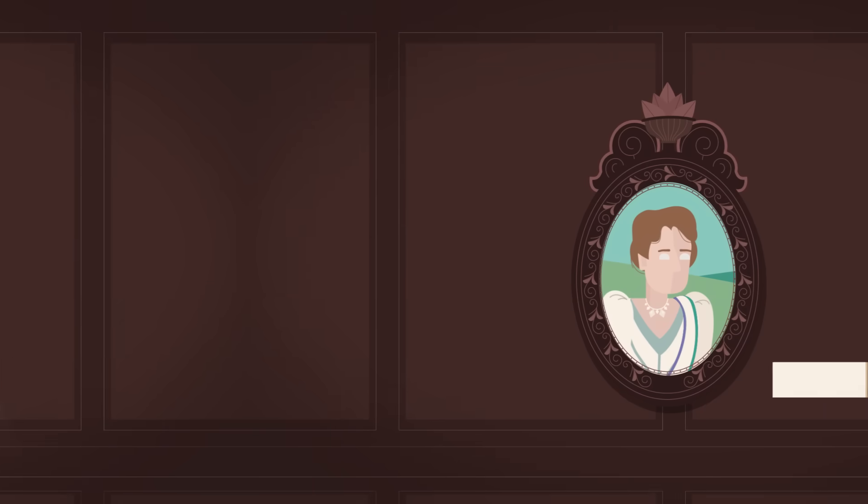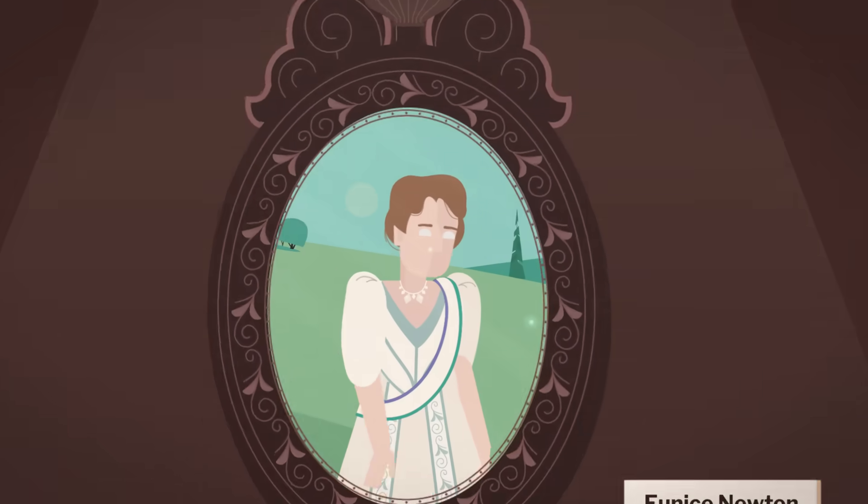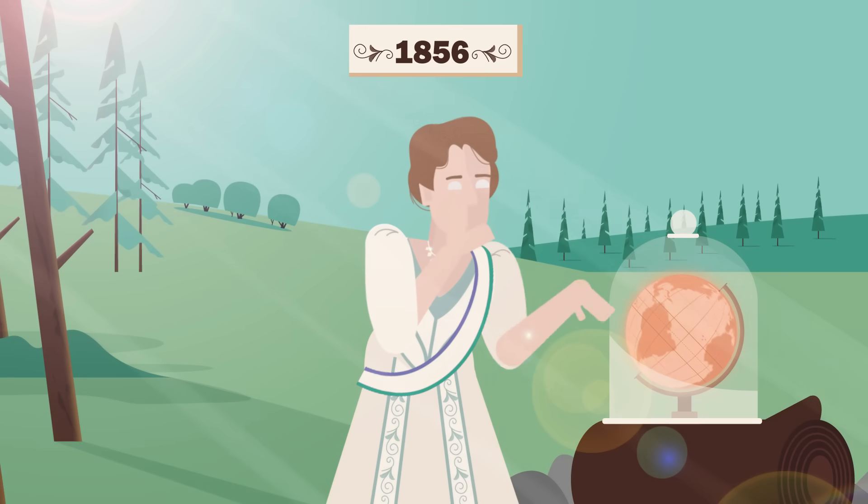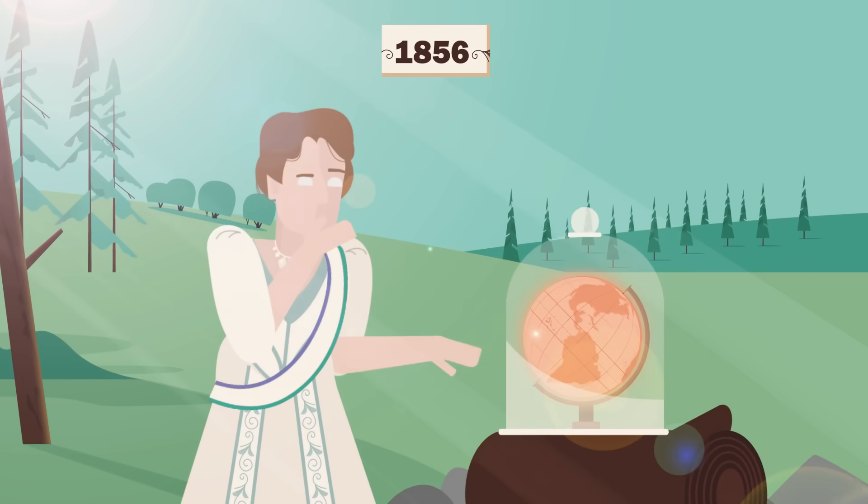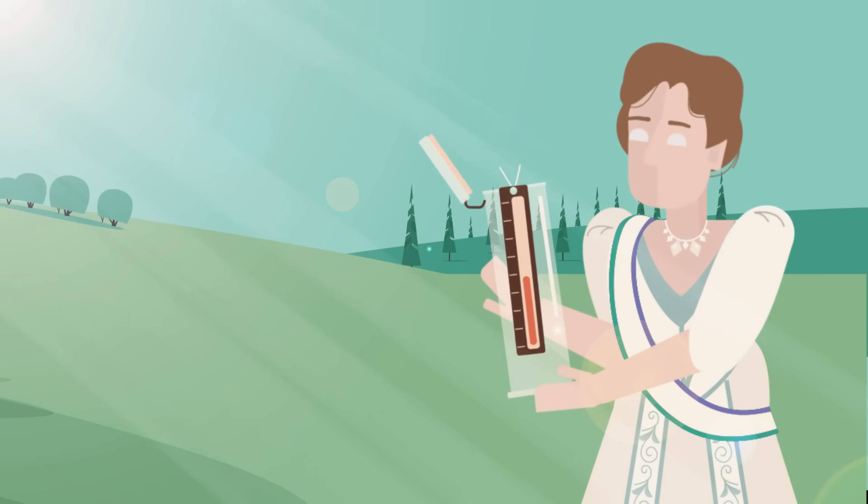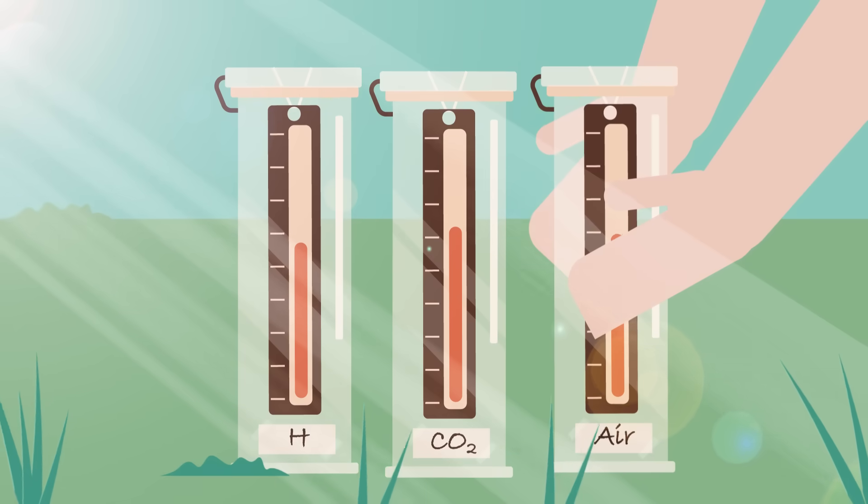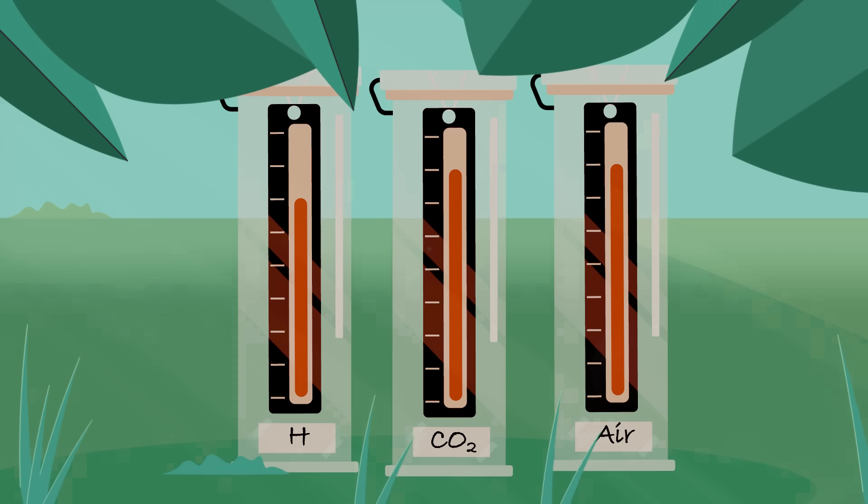It took three decades until another scientist, Eunice Newton Foote, became intrigued by the possibility that the atmosphere could be trapping heat. She devised an experiment: several glass cylinders equipped with thermometers and filled with different gases. She put the cylinders in the Sun to heat up, later moving them to the shade to cool down.